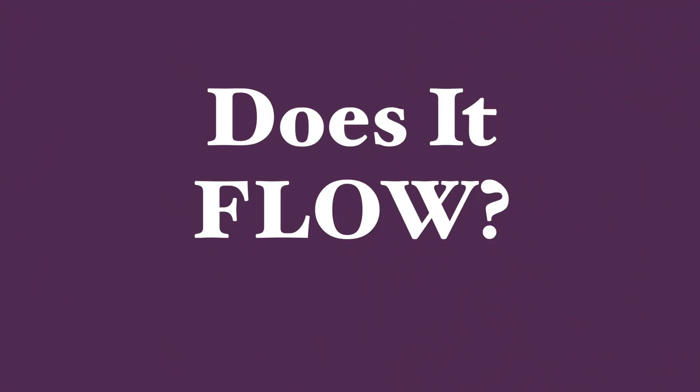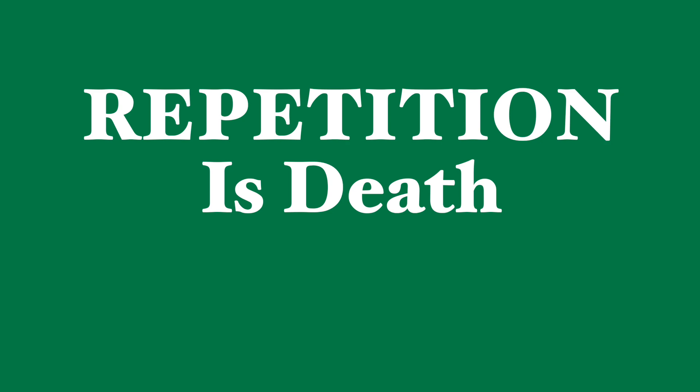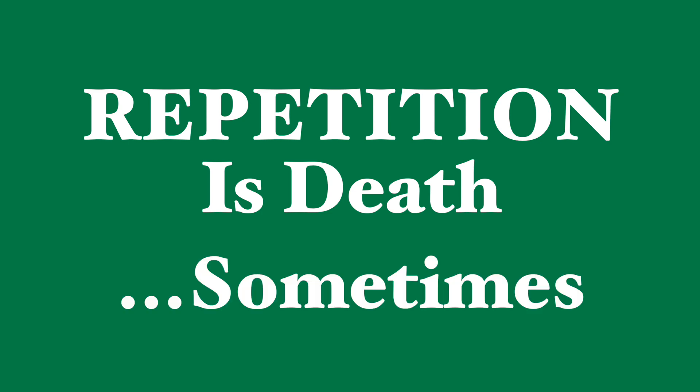Ask yourself: does it flow? Does each line somehow come from the last line and lead to the next? Even if it's a joke or an interruption or a deliberate change of subject, is it part of the flow of the scene? And is it news? Most dialogue should contain something unknown to the person hearing it. Don't show us people telling each other stuff they already know. And obviously, if dialogue should be news, then repetition is death. Repeating an idea or saying the same thing in different words should almost always be cut — except sometimes people talk like that, and it can reveal how they're thinking. So if you have characters repeat themselves, do it because they need to repeat.